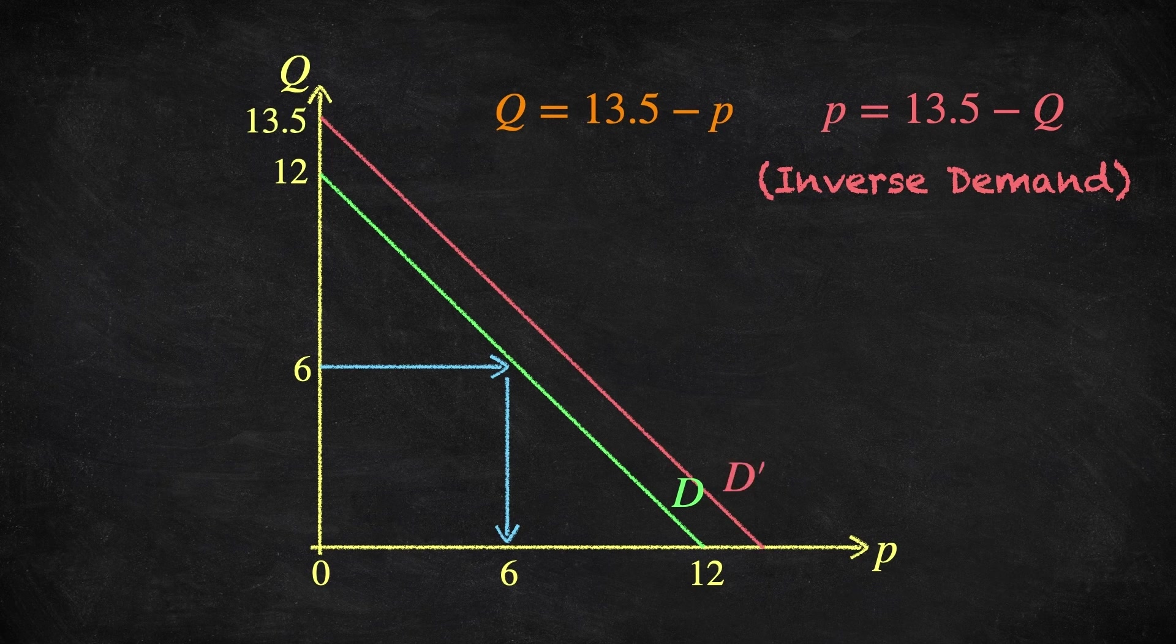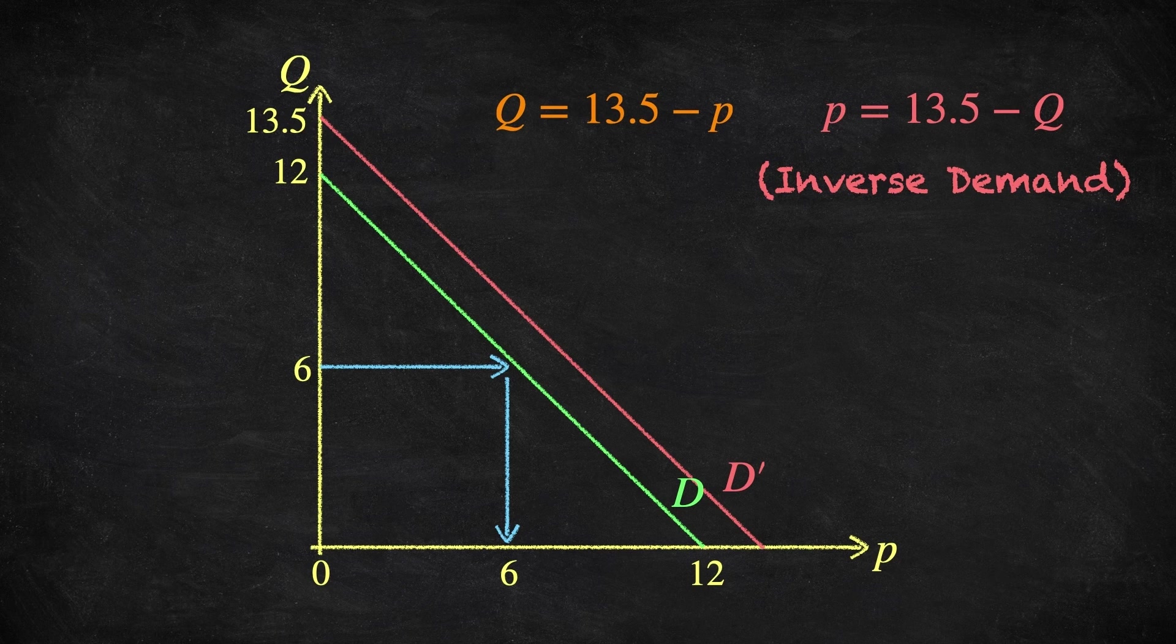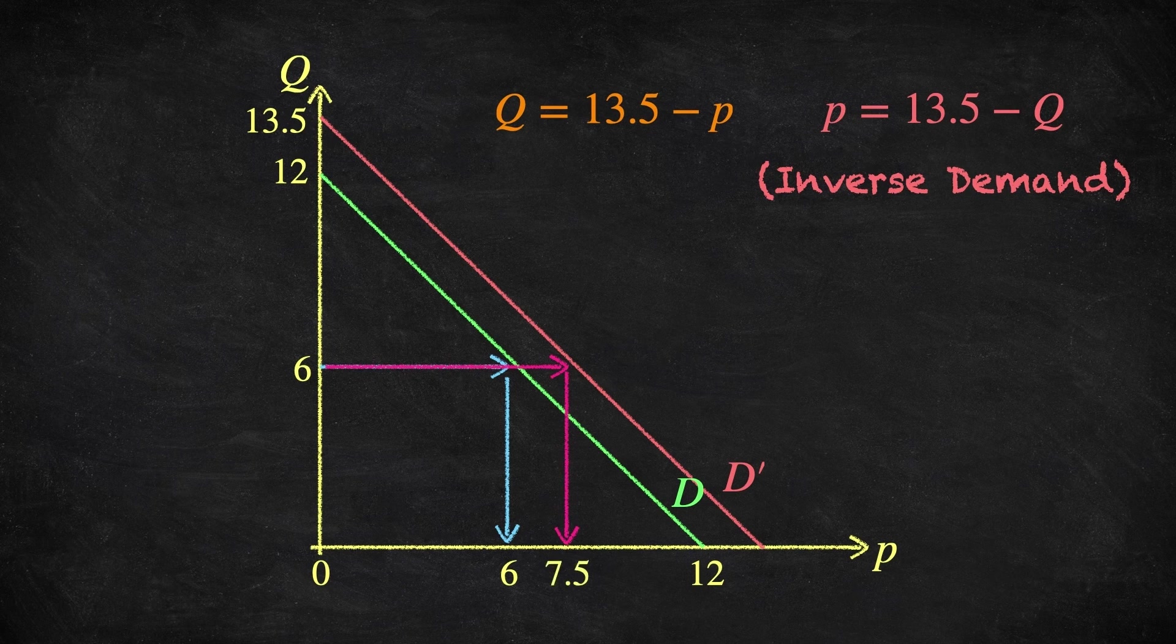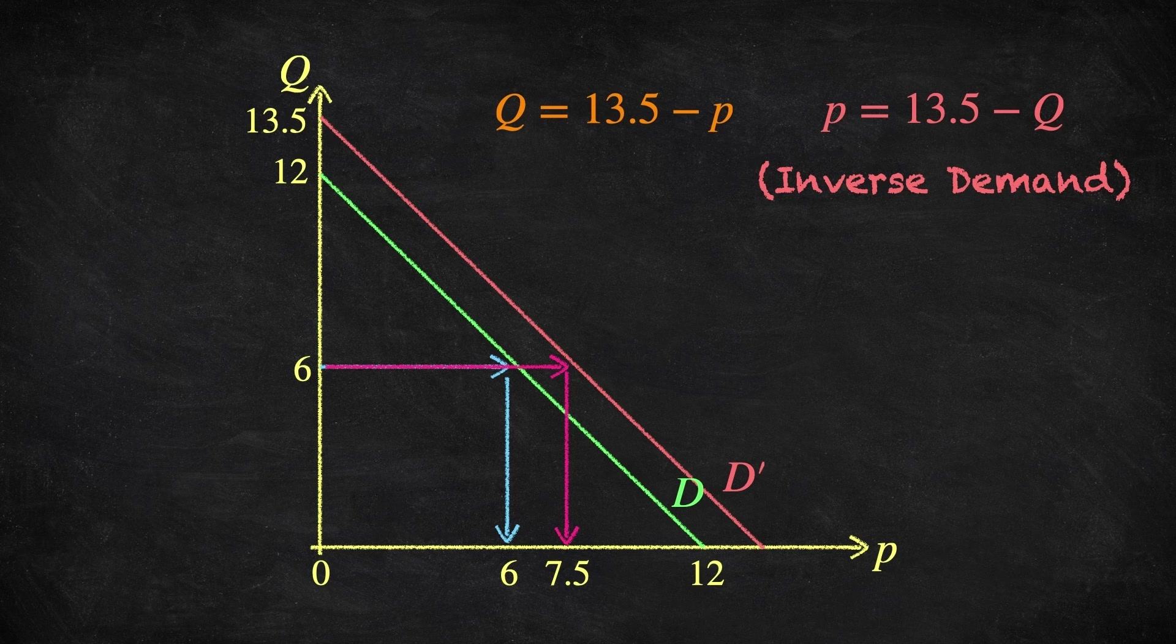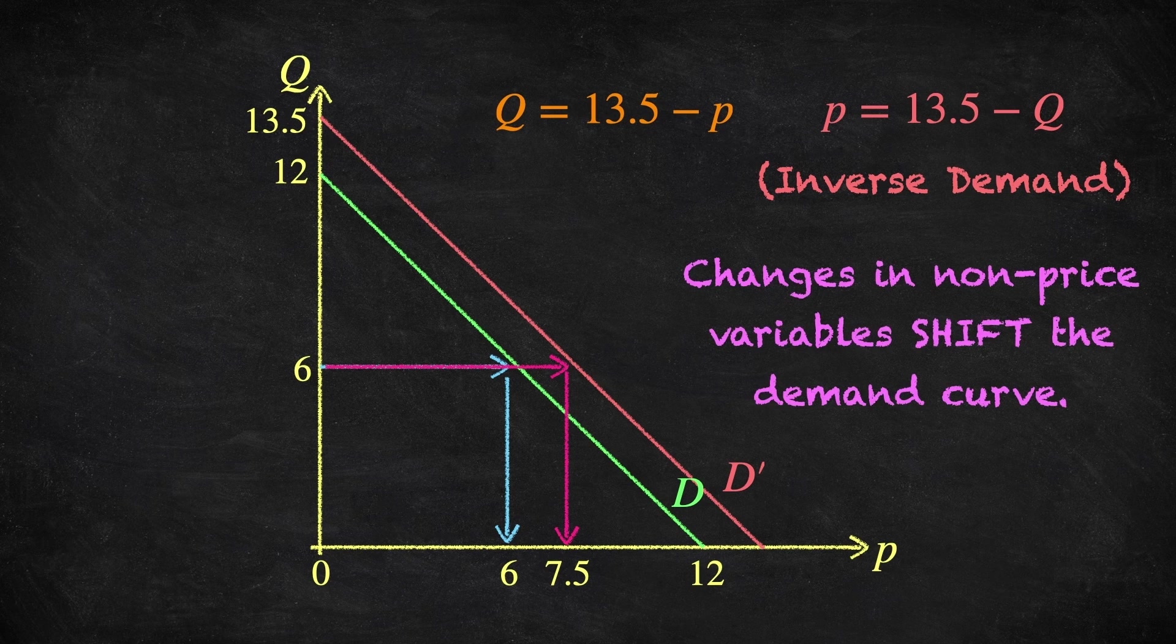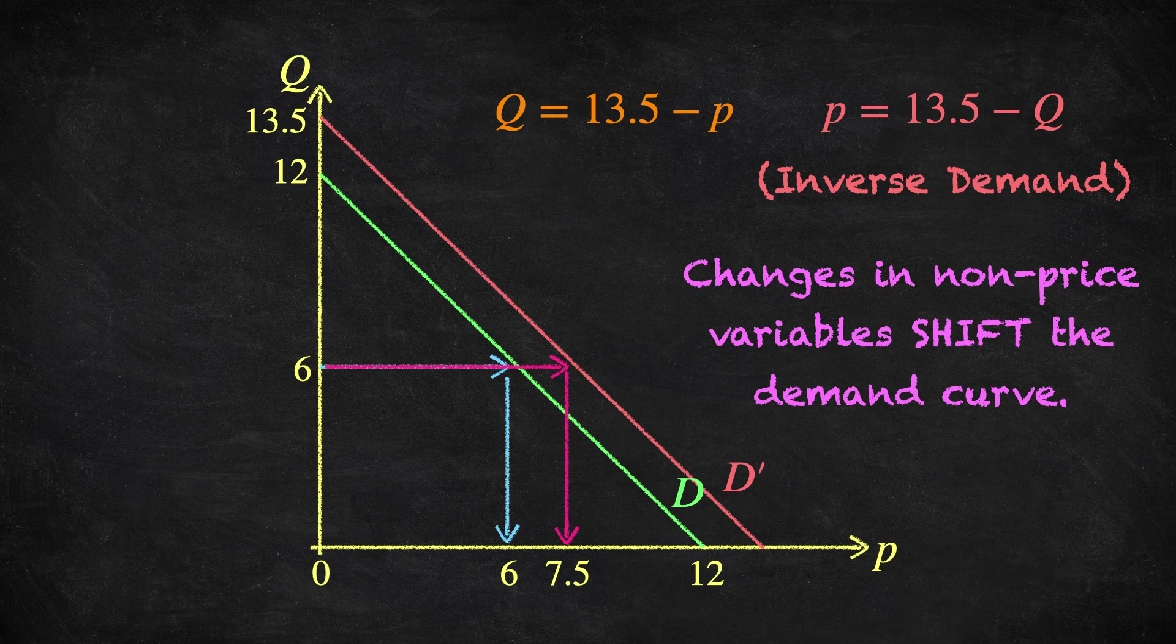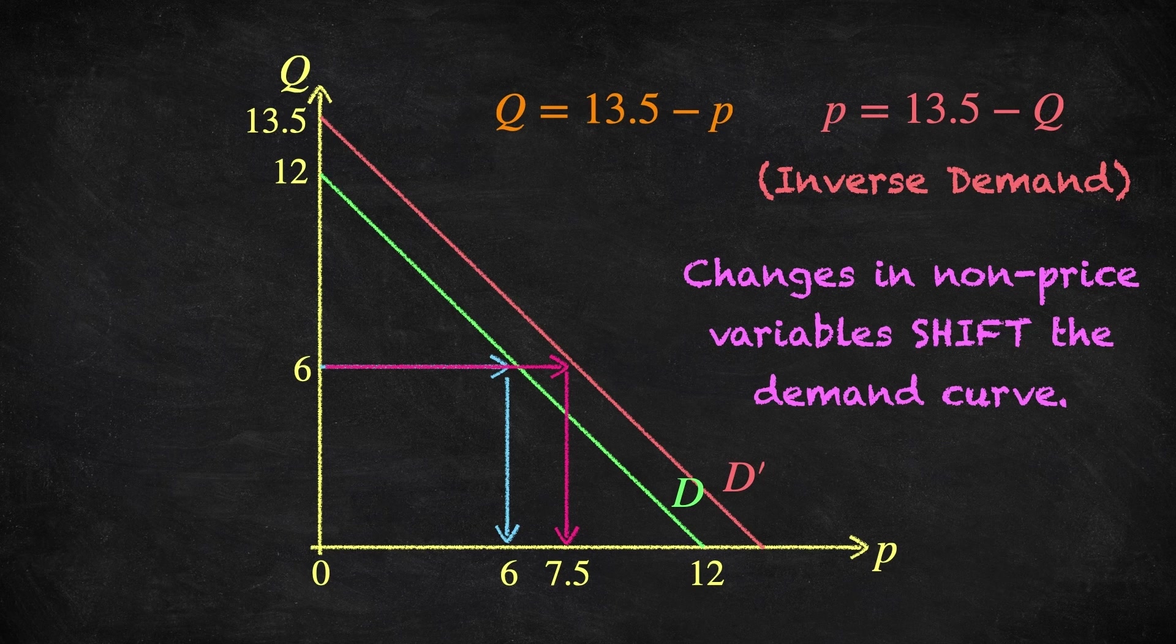The new demand curve, D prime, looks like this. Notice that the consumer's demand has now increased at every price level. For example, if the price is 6, then the consumer now demands 7.5, instead of 6. This is not a movement along the demand curve, it's something else. We call this a shift in demand. So, changes in price cause movements along the demand curve, changes in other variable levels cause a shift of the demand curve.